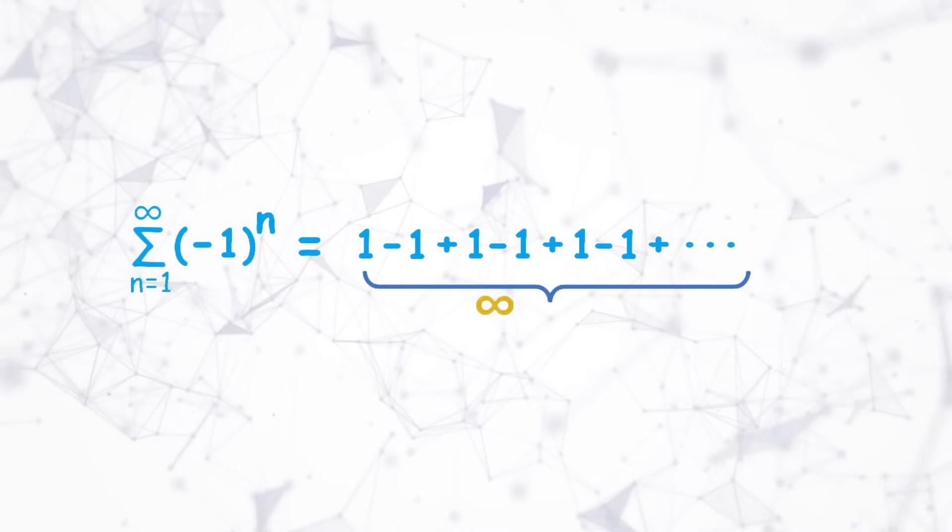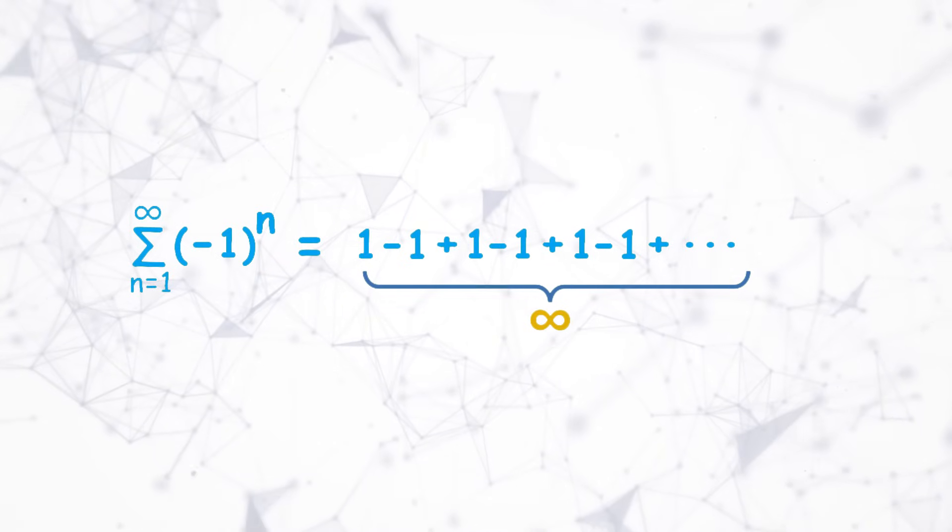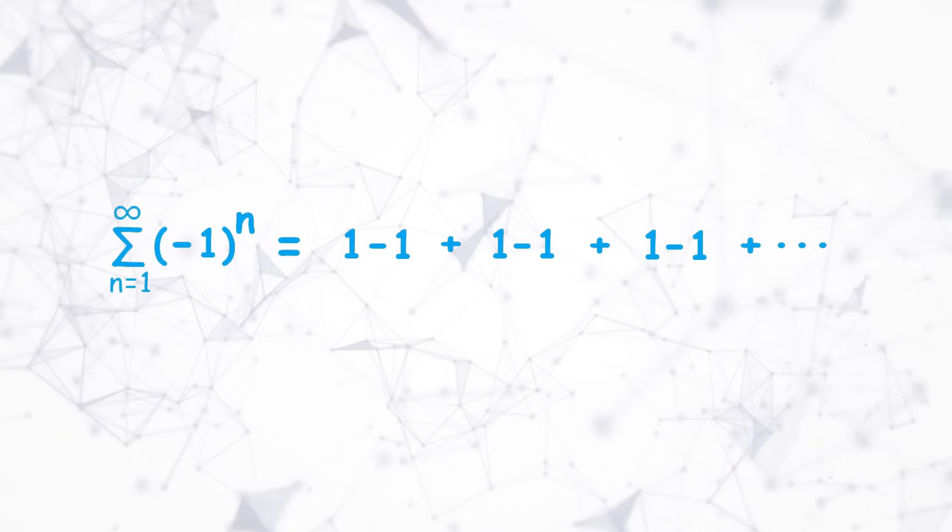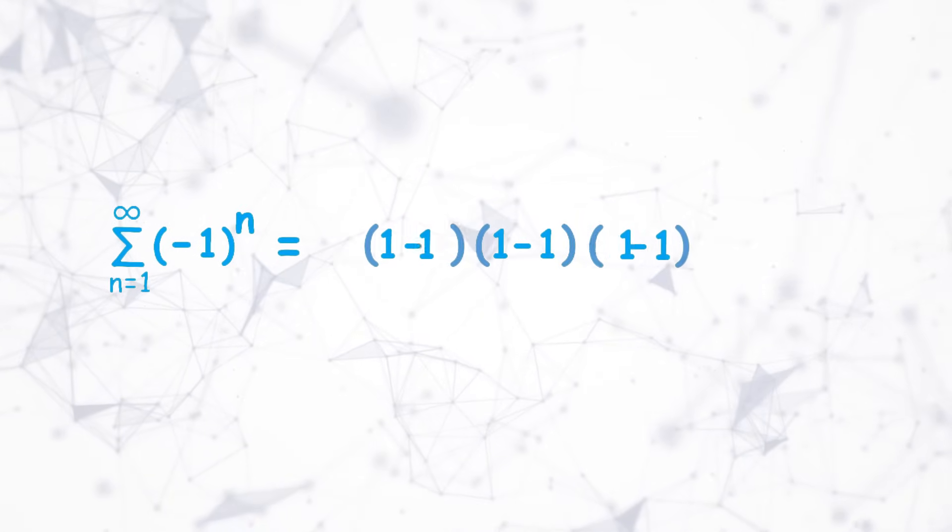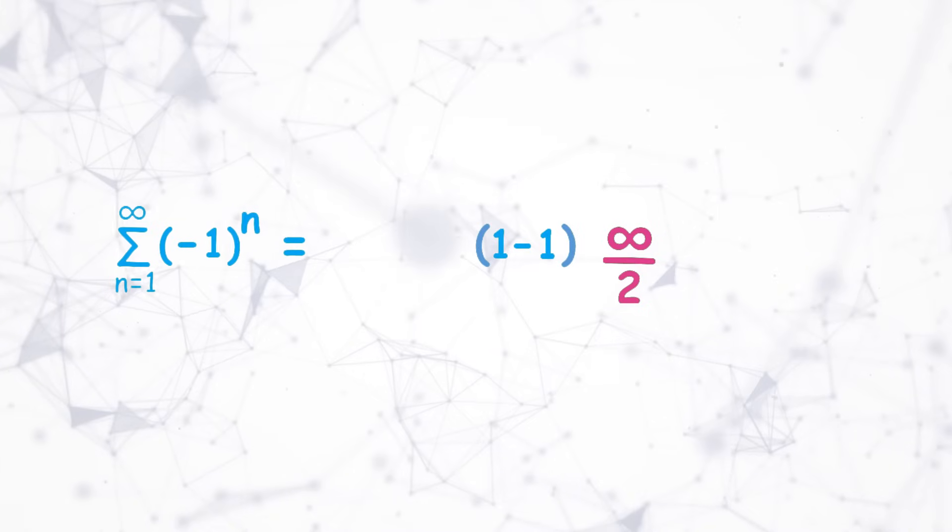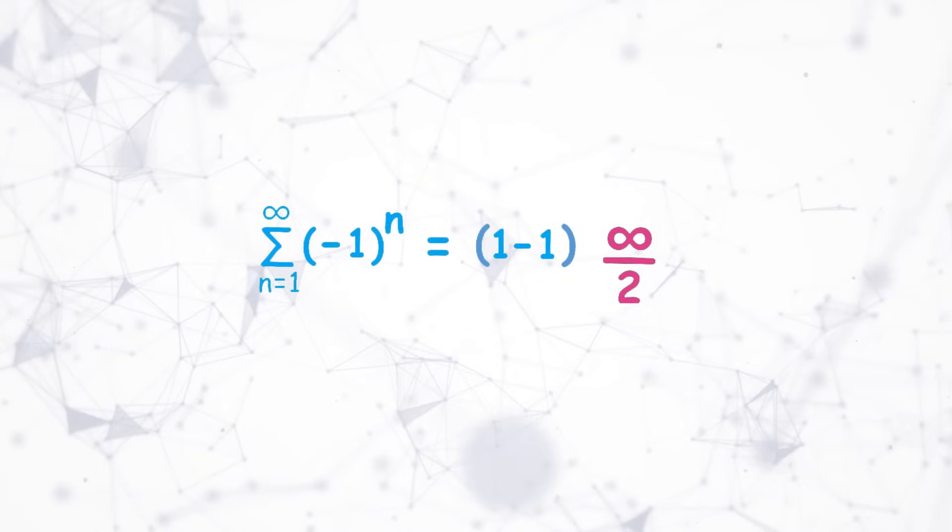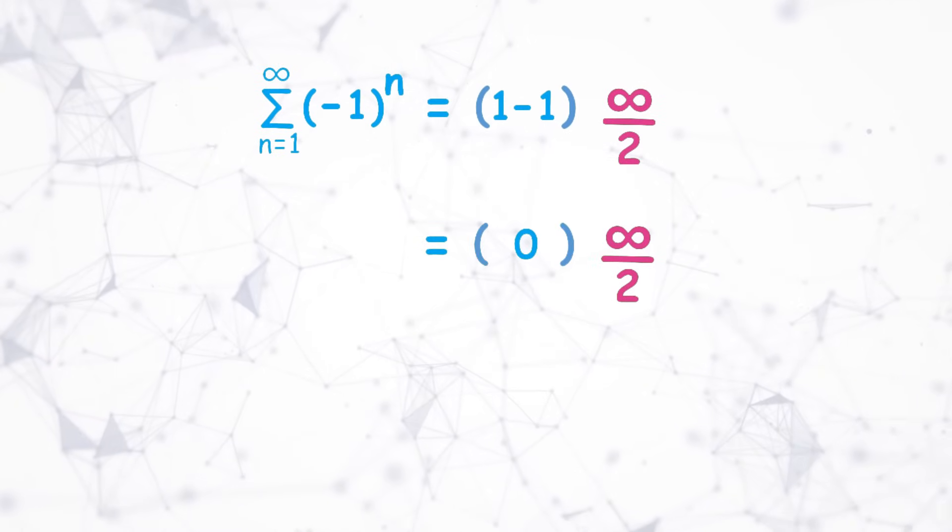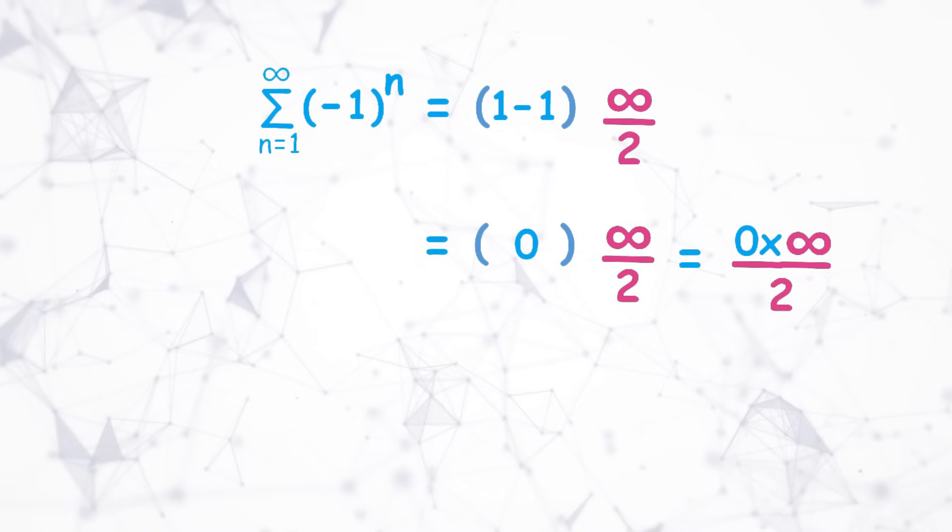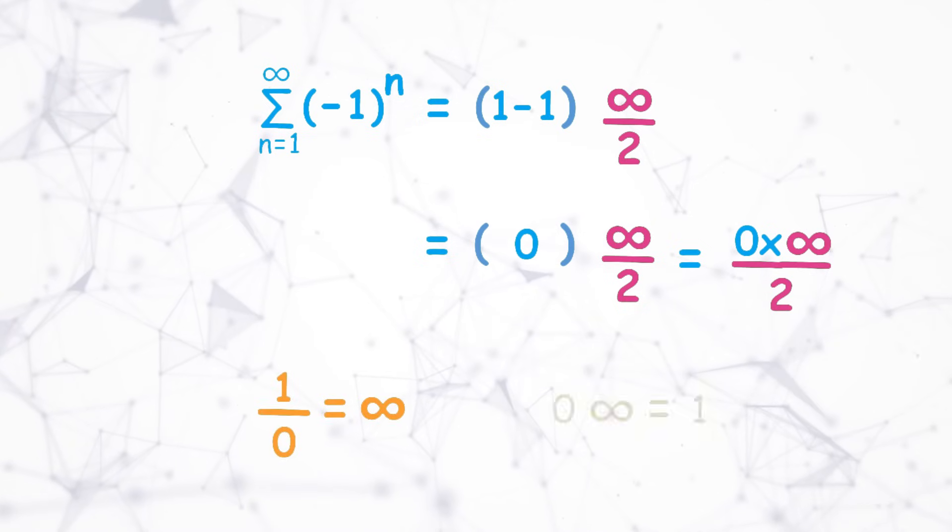We know that one is repeated infinite times, but when I group two ones together, then this is repeated infinity by half times. And 1 minus 1 is 0, so we get infinite times 0 by 2. In universal numbers, we know that the inverse of 0 is infinity, so 0 times infinity is 1.